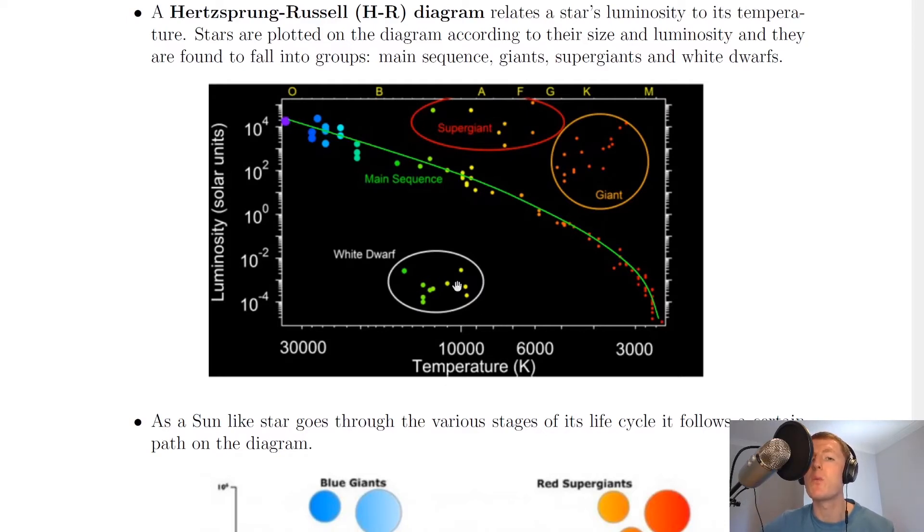Below the main sequence towards the lower left, we've got the white dwarf region. Remember we said that the majority of stars in the universe are going to be of a lower mass. So that's why the main sequence has a lot more stars than the giant, supergiant and white dwarf regions.